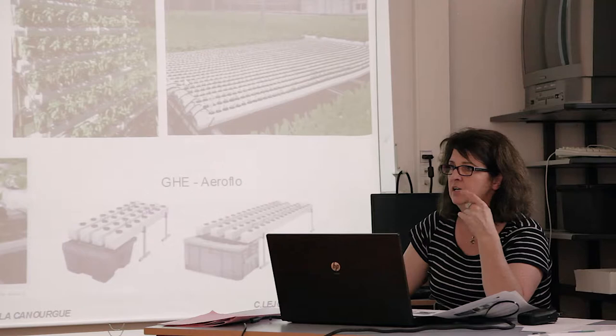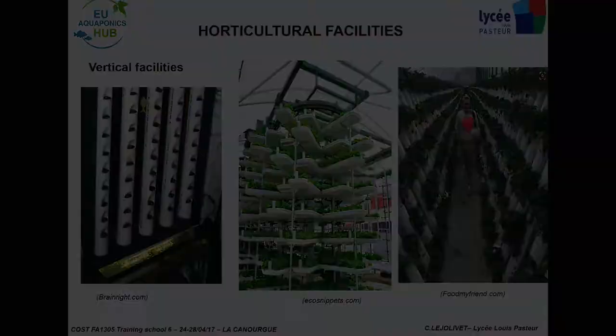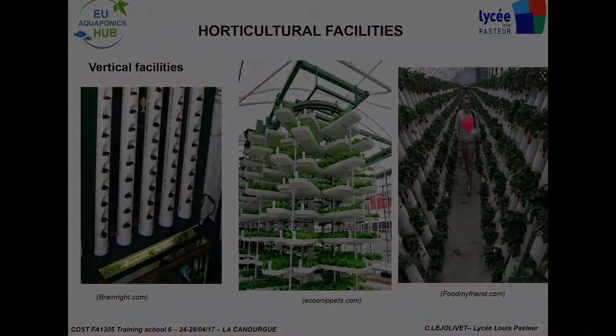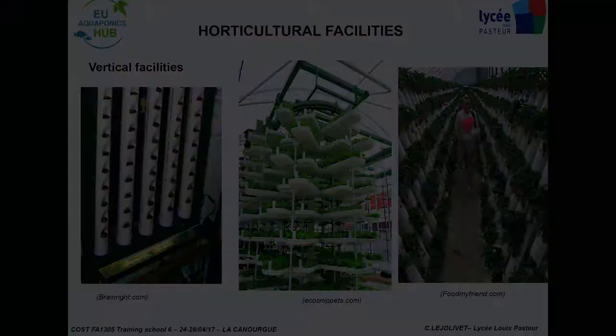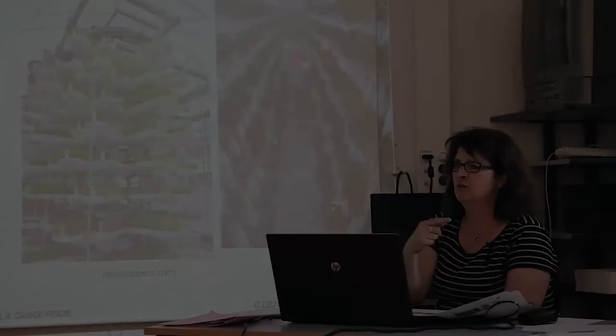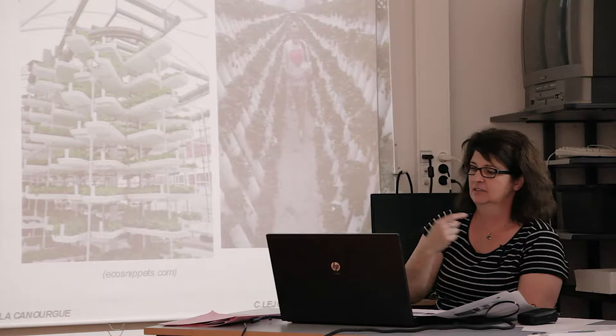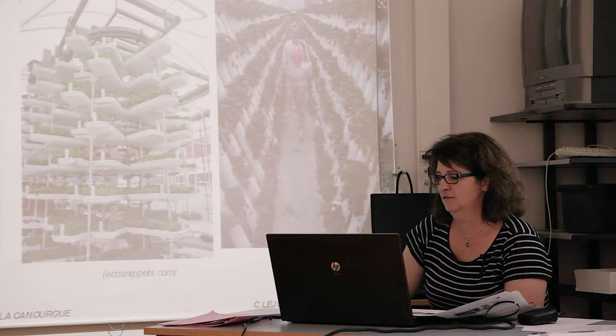There are also vertical systems to optimize the height of buildings or greenhouses. But it's important to arrange the whole system to avoid too much shading. Some systems are mobile — they turn around to catch the sun. It's common in urban farms. But you have to develop a local market to get a good price for your products.